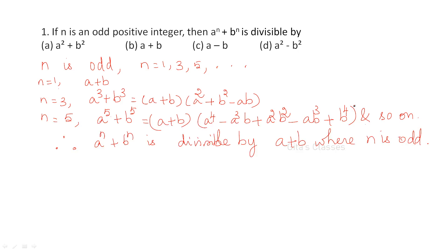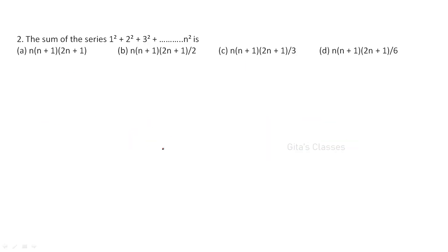When n = 3, a³ + b³ — this itself is a formula. Similarly, when n = 5, a⁵ + b⁵ = (a + b) × (...). So everywhere we are getting (a + b) as a factor. Therefore, aⁿ + bⁿ is divisible by (a + b) for odd positive integers n.